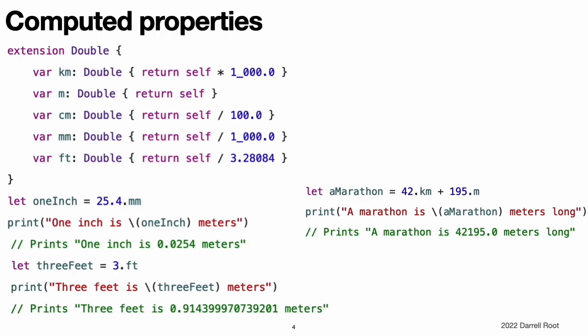Computed Properties. Extensions can add computed instance properties and computed type properties to existing types. This example adds five computed instance properties to Swift's built-in double type to provide basic support for working with distance units.